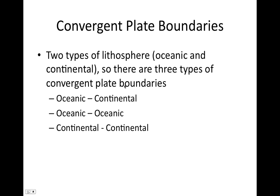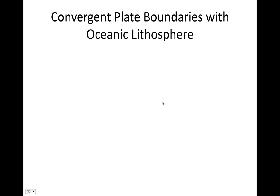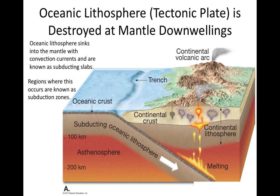We can have oceanic lithosphere converging with continental, oceanic lithosphere converging with oceanic, and finally continental lithosphere converging with continental lithosphere. We're first going to look at convergent plate boundaries in which oceanic lithosphere is involved. Something very interesting happens: the oceanic lithosphere, when involved in a convergent plate boundary, subducts — or sinks — down into Earth's interior into the mantle.